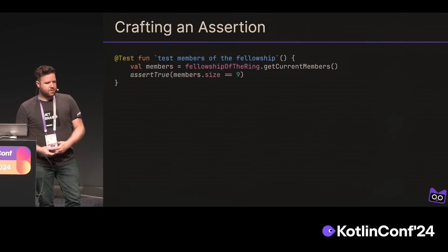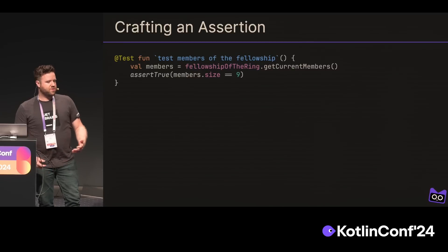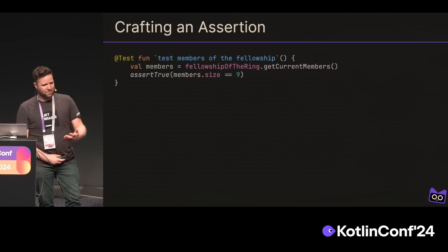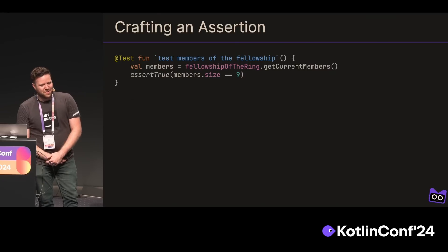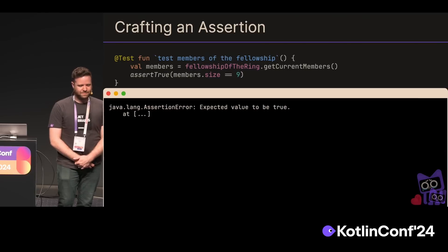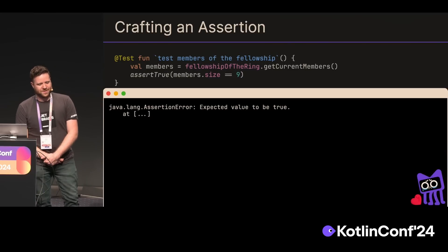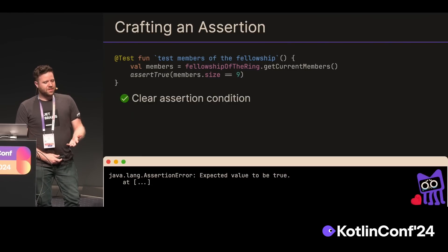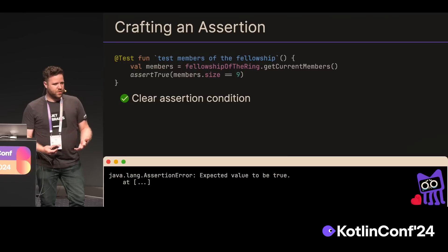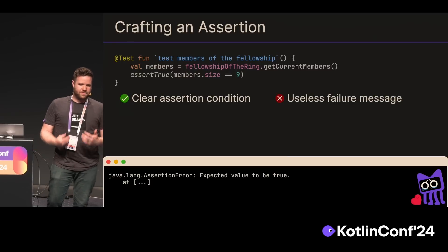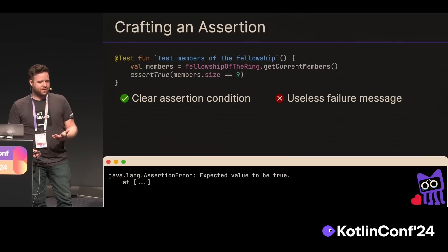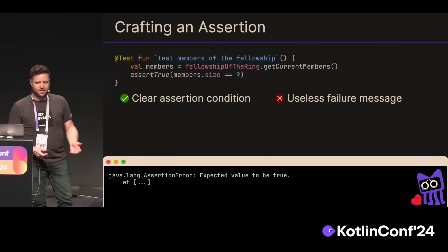If you're new to testing, you might naively think that assert true is a good assertion to use. And if we're testing the size of Fellowship of the Ring, we'd say we'll just check that the size is equal to 9. The condition here is really clear — we know what we're testing — but the failure is quite useless. All we know is that the size is not 9; we don't know if there are more members or less members.